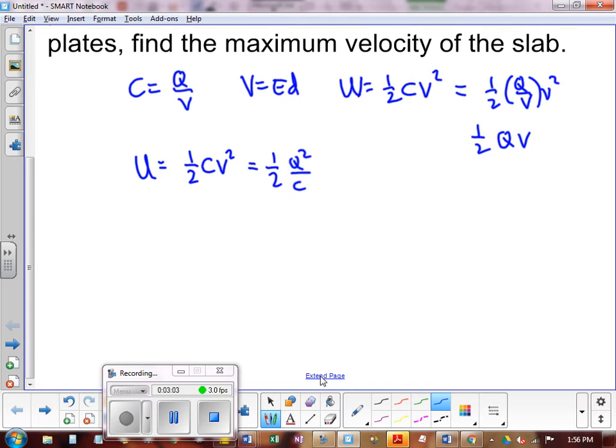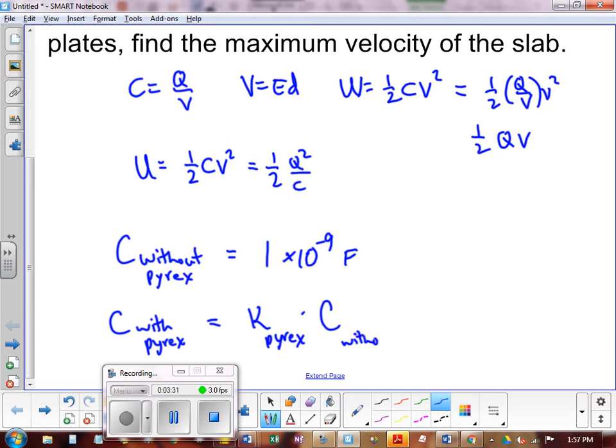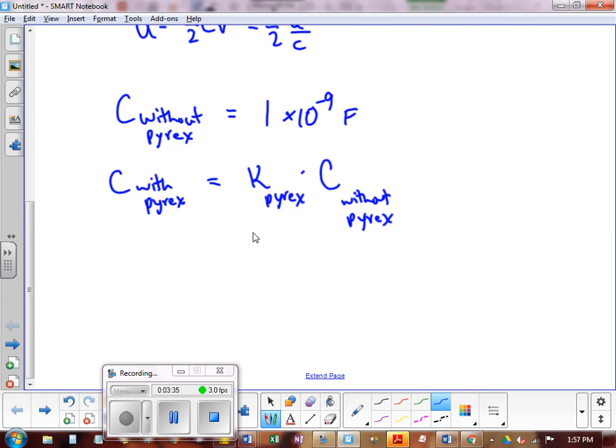One of the formulas we came across yesterday was the potential energy is one half CV squared. Yesterday we also wrote it as one half times Q squared over C. So what I want to point out is that when you bring that slab in, it does change the capacitance value. C without the slab, C without the Pyrex is given. It was one nanofarad. But C with the Pyrex inserted is different. It's going to be basically kappa for Pyrex times the capacitance without Pyrex.